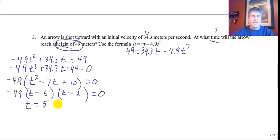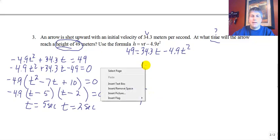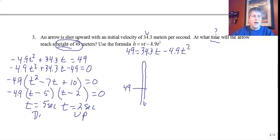I set each factor equal to 0. I get t equals 5 and t equals 2. So that's two different times that the arrow is at 49 meters high. And believe it or not, that makes sense. At 2 seconds and at 5 seconds. Well, 2 seconds, the arrow is on its way up. It might reach 49 meters here at 2 seconds. But then the arrow comes back down and then it hits the ground. So it does hit 49 meters twice, once on the way up and once on the way down at 5 seconds. So at what time will the arrow reach 49 meters? Twice, at 2 seconds and 5 seconds.